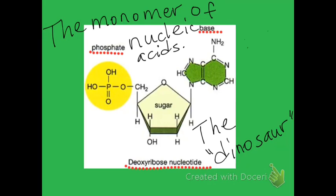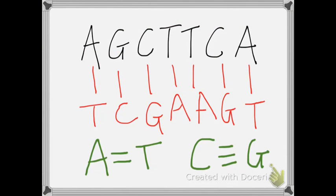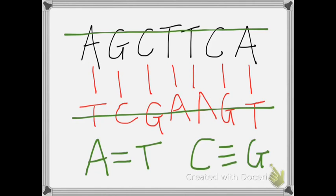Remember, the monomer of nucleic acids looks like this. It has a phosphate, a base, and a deoxyribose sugar — notice the dinosaur shape. Here you see a short strand of DNA, and across from it is its base pairing. Remember, apples grow on trees and cars use gas. So across from each other you have an A and a T, a G and a C, and they pair and match that way.